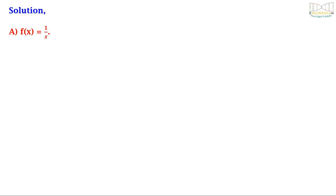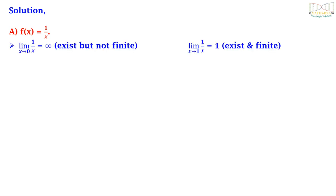Solution. For option A, f(x) = 1/x: the limit as x tends to 0 of 1/x equals infinity, which exists but is not finite; and the limit as x tends to 1 of 1/x equals 1, existing and finite. Since the limit as x tends to 0 is not finite, option A is not true.